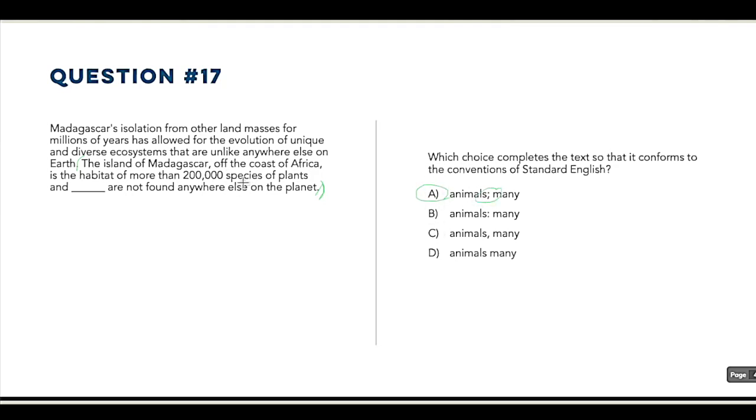And just to clarify here, we have the island of Madagascar off the coast of Africa. So we can get rid of this to kind of simplify. The island of Madagascar is the habitat of more than 200,000 species of plants and animals, period. Many are not found anywhere else on the planet, period. So two full sentences, we want a period or a semicolon.